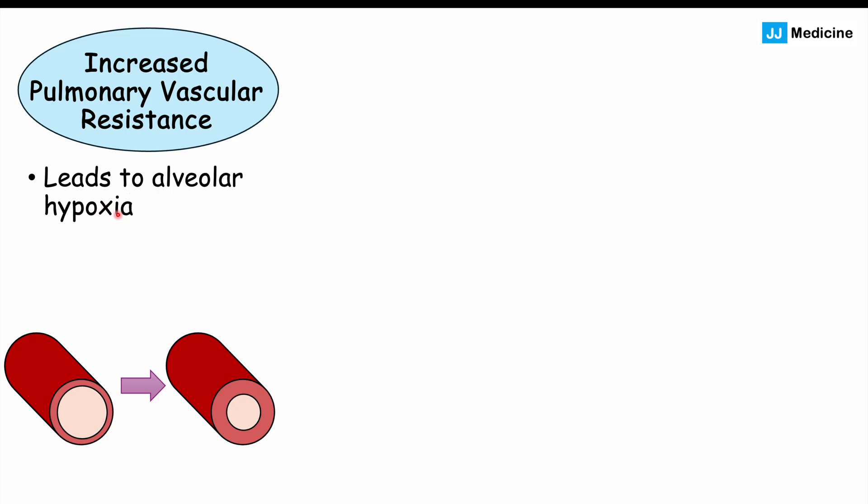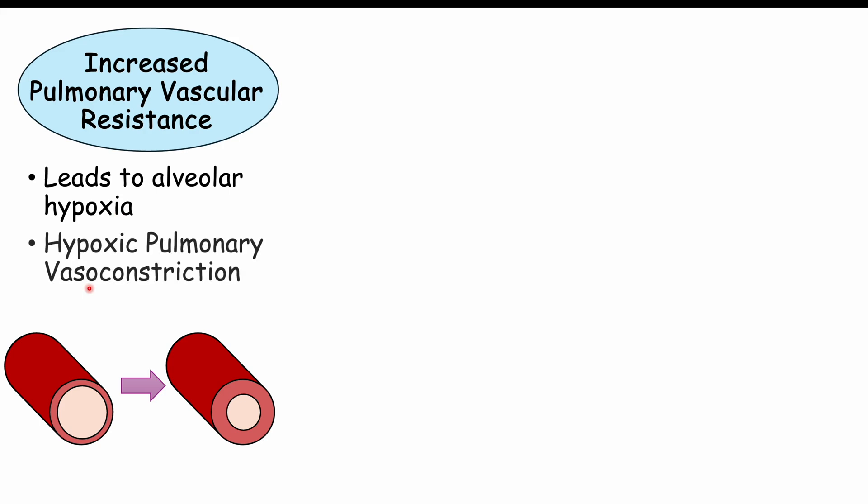The reason for increased pulmonary vascular resistance is alveolar hypoxia. If there is decreased air coming into the lungs — either because the patient has no effort of breathing (central sleep apnea) or has breathing effort but obstruction that prevents airflow from getting through (obstructive sleep apnea) — there's not enough oxygen reaching the lungs. The vasculature in the lungs then constricts; this is called hypoxic pulmonary vasoconstriction.